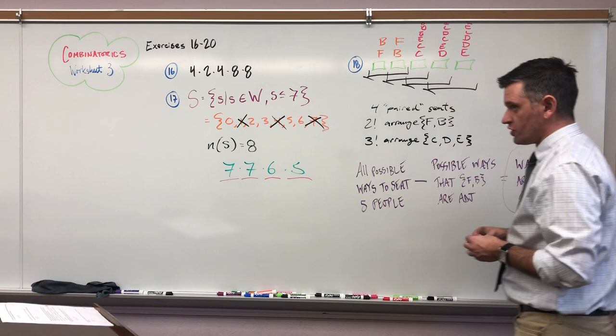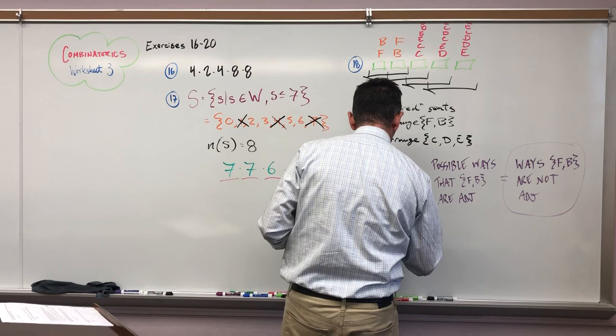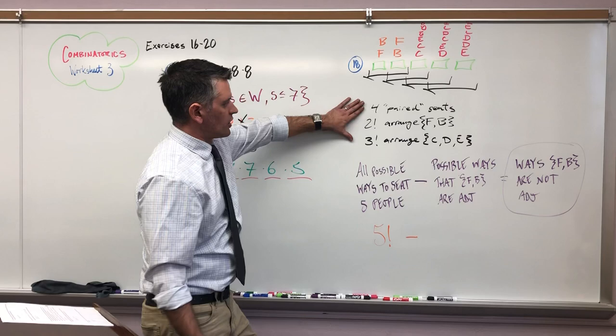And all that's going to be left is going to be ways F and B are not adjacent, which is what we want. This is what we want. So if we start with all possible, we take away what we don't want, we're going to end with what we want. So in a great way to do the British subtraction there, say 'take away,' we're going to remove what we don't want from all possible, and then we'll have what we need. I can arrange five people in five seats in 5 factorial ways, minus...